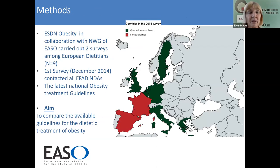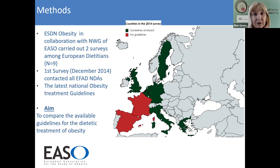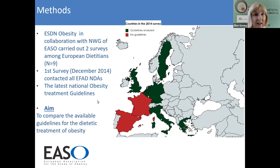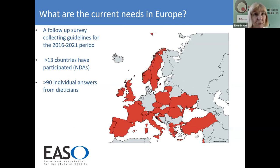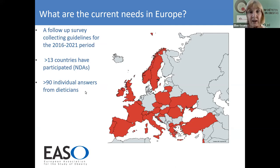Our methods involved two surveys. The first survey was carried out in 2014, where only nine countries had guidelines and participated. The second survey was conducted later, and you can see that green countries had guidelines while red countries did not. The aim was to compare available guidelines for the dietetic treatment of obesity. The follow-up survey was carried out from 2016 to 2021, with 13 countries participating and also 90 individual dietitians in these countries.